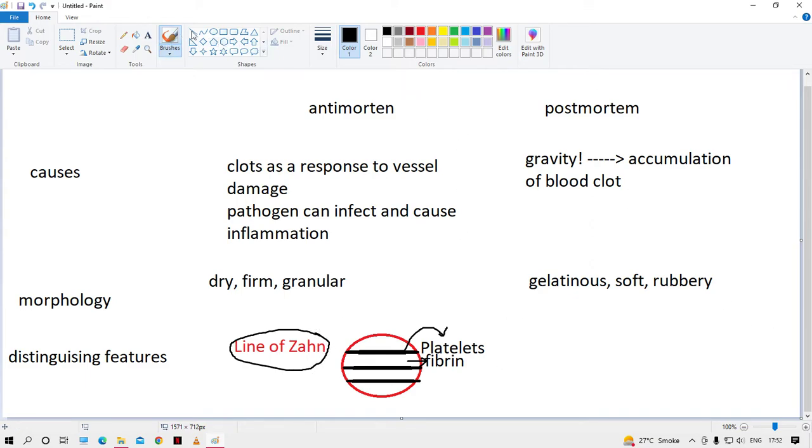Whereas in the postmortem clot, imagine this is the clot. We see two areas: a lower area and an upper area. The lower area is red, whereas the upper area is yellowish in color. The lower area is accumulation of RBCs basically, because as I said, gravity is helping them settle down, so RBCs have settled down.